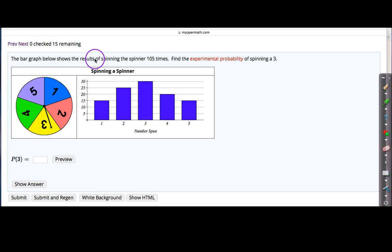The bar graph below shows the result of spinning the spinner 150 times. Find the experimental probability of spinning a 3.